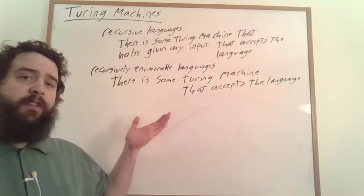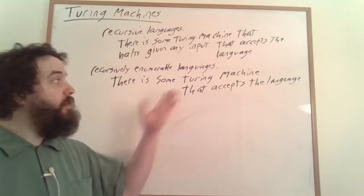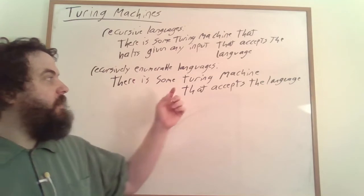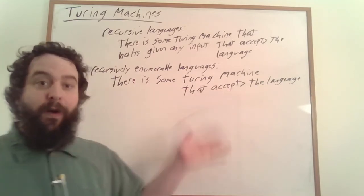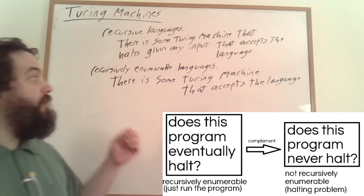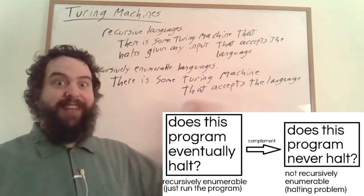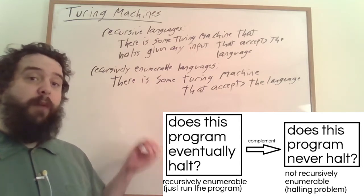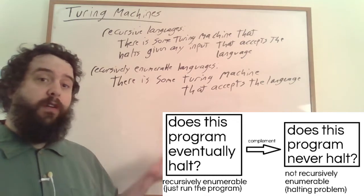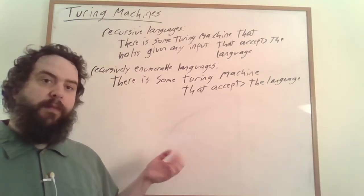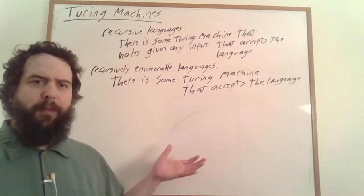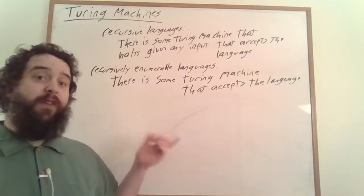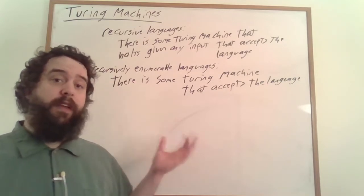The recursively enumerable languages aren't closed under complementation. If you have a Turing machine that takes in a particular string, interprets it as code, runs the code, and then accepts if the code eventually halts — the complement would have to be a machine that you can feed any program to and if it doesn't halt, it will tell you that it won't halt. This is the infamous halting problem. There is no program that will universally tell you if a particular piece of code won't halt. There are some heuristics for solving this problem, such as identifying if the program goes into an infinite loop, but there is no one computer program that can universally determine this.